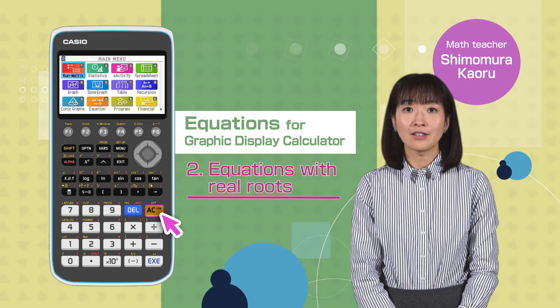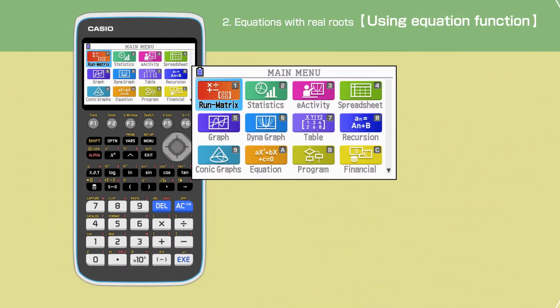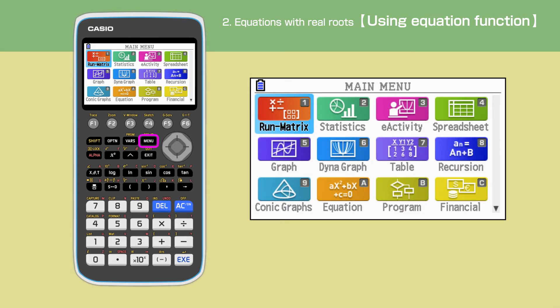Switch on your calculator by pressing the AC button. Press the menu button to open the main menu, then move the cursor or press A to select the equation function.